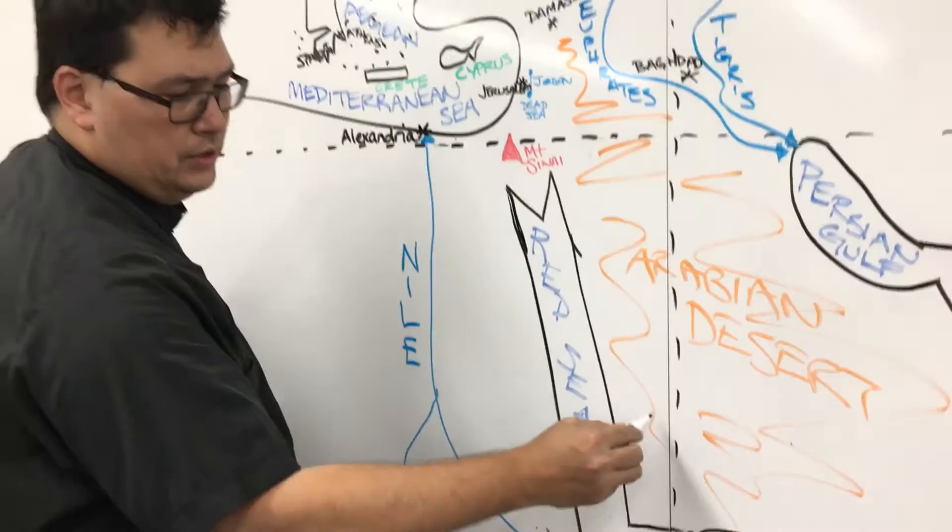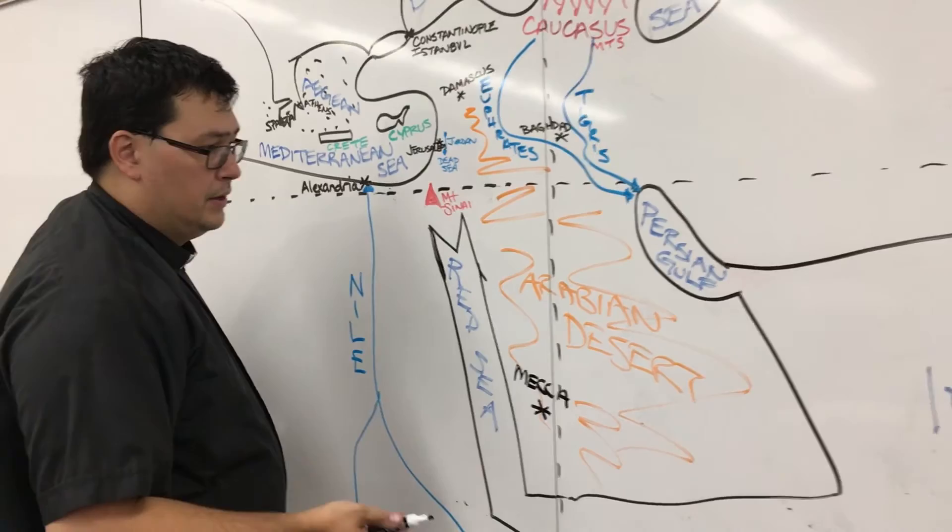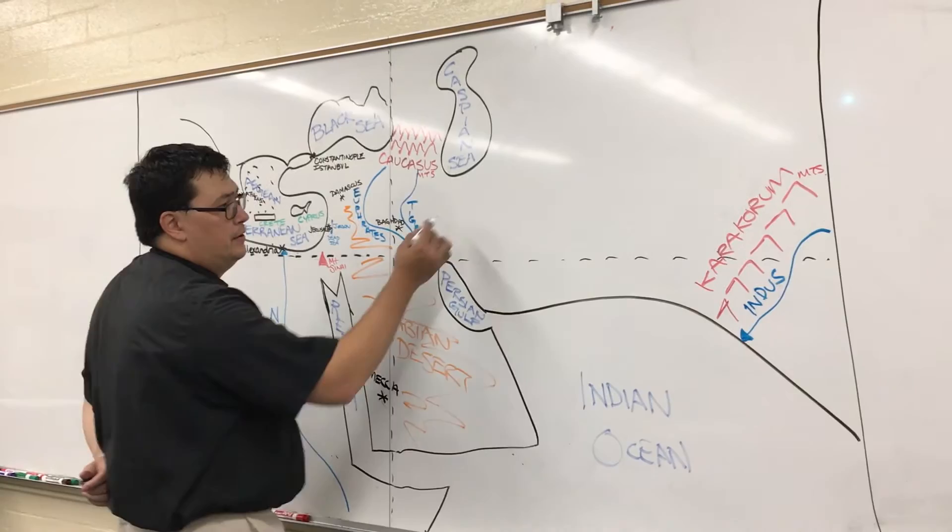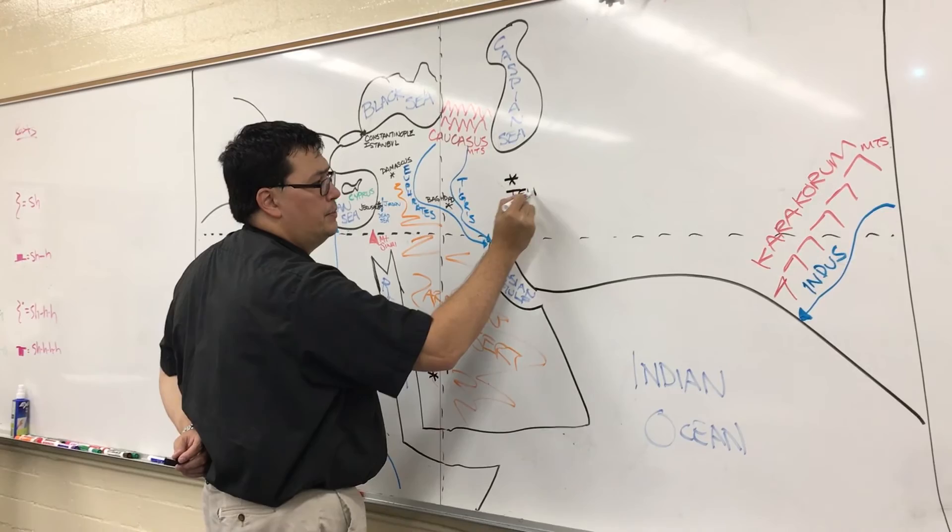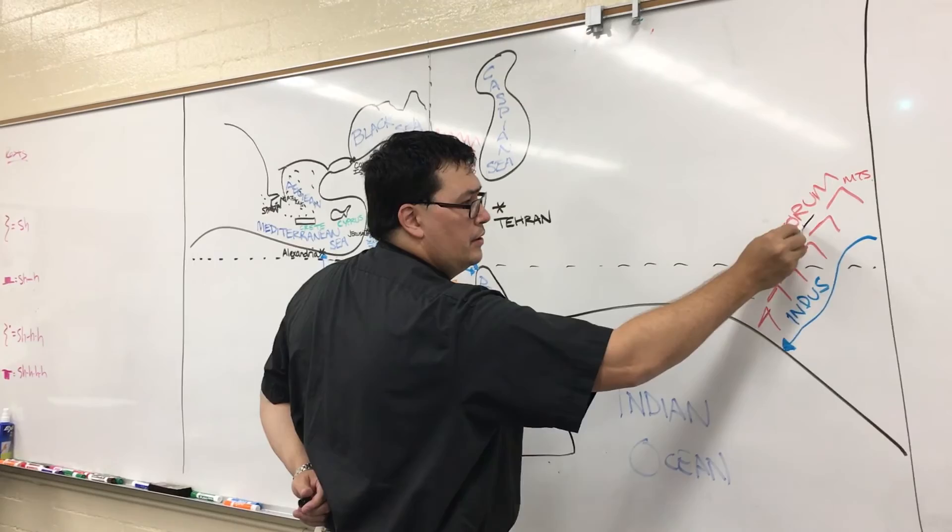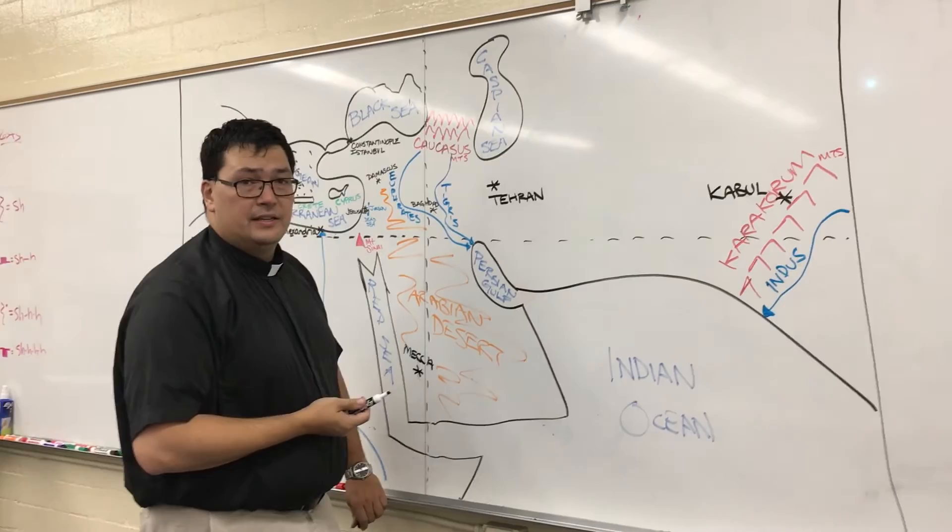And then here in the Arabian desert, somewhat near the Red Sea, you have the Holy City of Islam, which is called Mecca. And that's where the prophet Muhammad was from. So remember, M stands for Moses, but M also stands for Muhammad and Mecca, right here in the Middle East. Two more cities, and then we're done. The first is here, south of the Caspian Sea, and that's the city of Tehran, which is the capital of the country Iran, or used to be known as Persia, hence the Persian Gulf. And the last city to know about is up here in the Karakoram Mountains, and that's the city of Kabul. K-A-B-U-L, Kabul, which is the capital of Afghanistan.